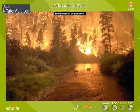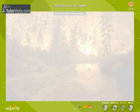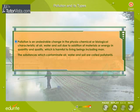This change, which is called environmental degradation, has become a major issue before the world. Pollution is an undesirable change in the physiochemical or biological characteristic of air, water, and soil due to addition of materials or energy in quantity and quality which is harmful to living beings, including man. Substances which contaminate air, water, and soil are called pollutants.